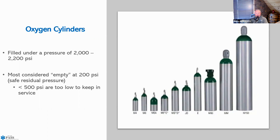We like to bring this up because oftentimes in your agency, it may be that you change things out if they are under 500 PSI. But keep in mind that under 500 PSI, they're too low to keep in service based on the standard from National Registry. So if you get a question about when should they be changed out, it should be at 500 at a minimum, because at 200 they are now considered to be empty.